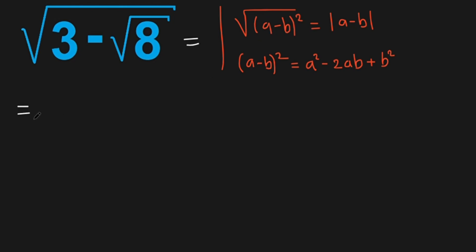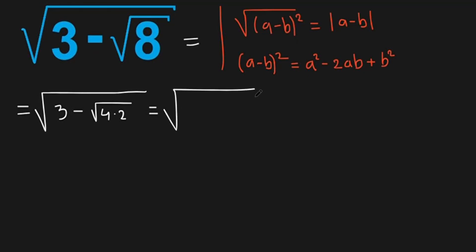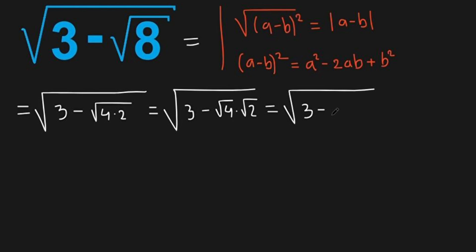So what do we have now? We have square root of 3 minus square root of 8. The 8 can be written as 4 times 2, so this equals square root of 3 minus square root of 4 times square root of 2. And since square root of 4 is 2, we have square root of 3 minus 2 times square root of 2.